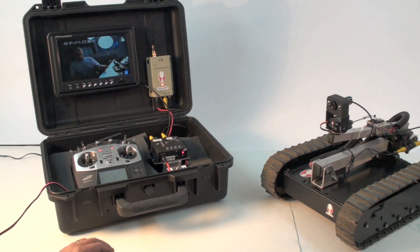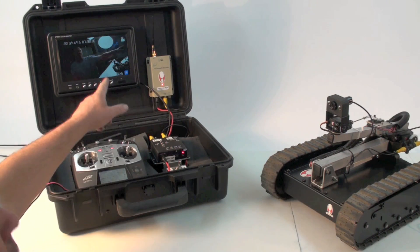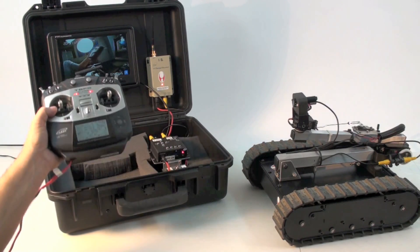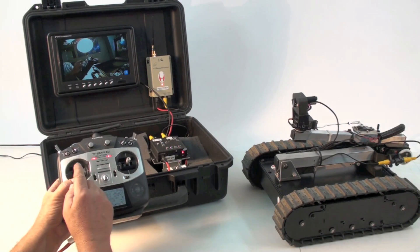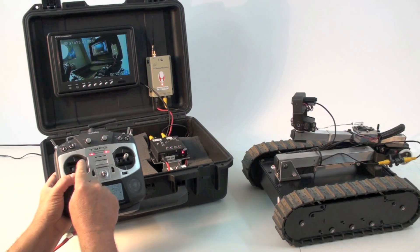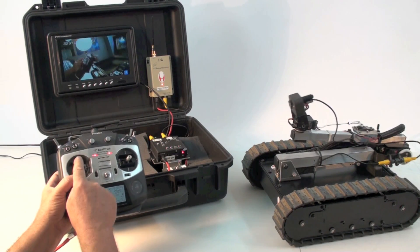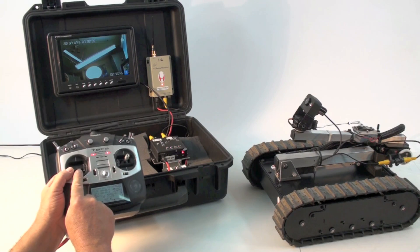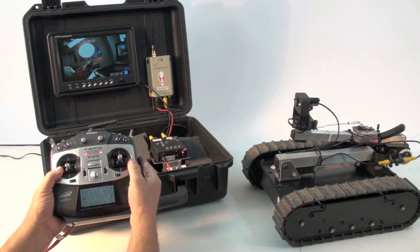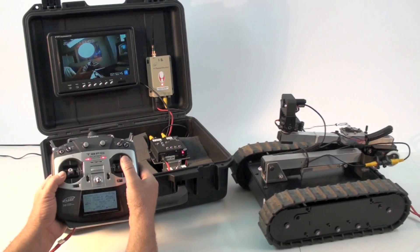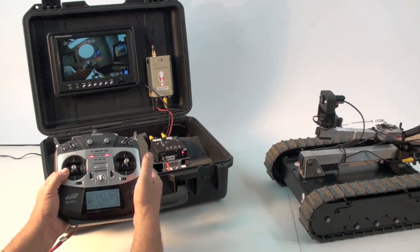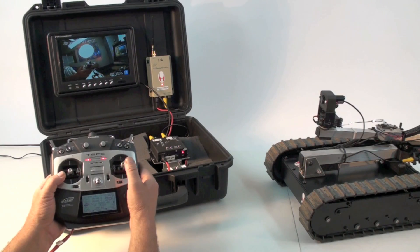Now with everything powered up you can see that there is an image in the display. Controlling a robot is very easy. With the radio, the stick on the left controls the pan and tilt of the camera. Left and right, left and right, down and up. The stick on the right controls the forward motion and backward motion. If you move it left and right, the robot responds accordingly.